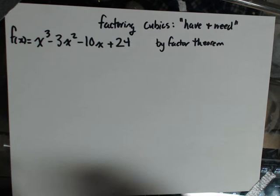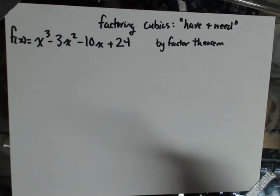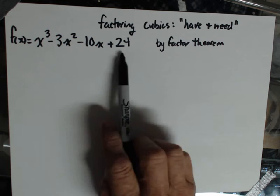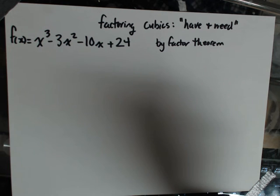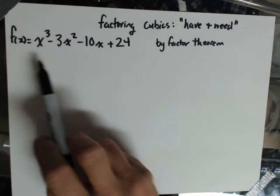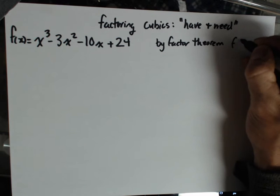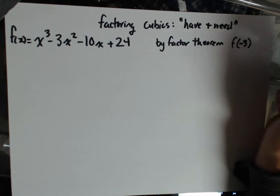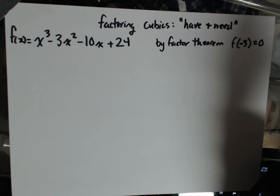This is factoring using the have and need system, and we are factoring cubics this way. By the factor theorem, without wasting any time, basically I've already figured out that f at negative 3 is equal to 0 for this particular function.